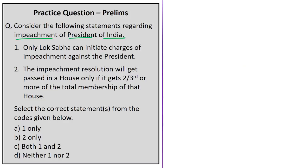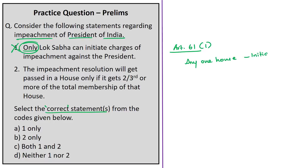The next question is with respect to impeachment of the President of India. Statement 1: only Lok Sabha can initiate charges of impeachment against the president — this is incorrect, because according to Article 61, the process can be initiated by any one of the Houses of Parliament, either Lok Sabha or Rajya Sabha. In the United States, it can only be initiated by the House of Representatives. Since Statement 1 is incorrect, eliminate options A and C. Statement 2: the impeachment resolution gets passed only if it gets two-thirds majority or more of the total membership of that House — this is correct. So the correct answer is Option B — two only.